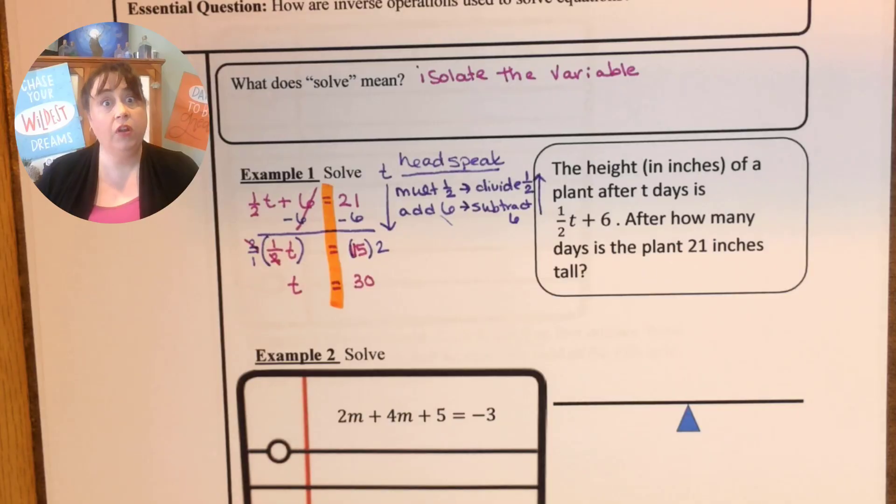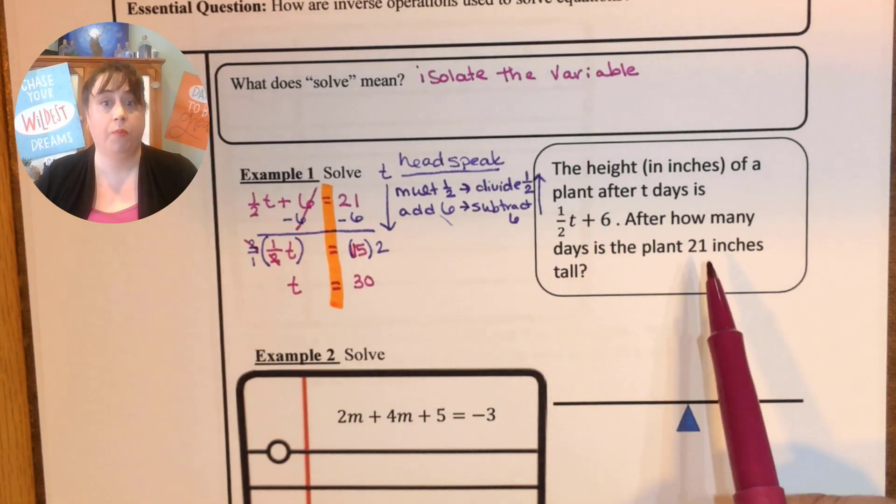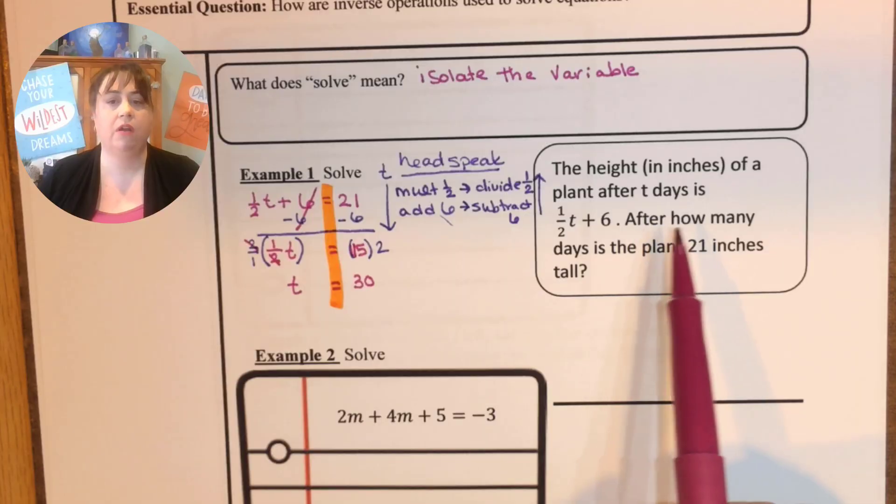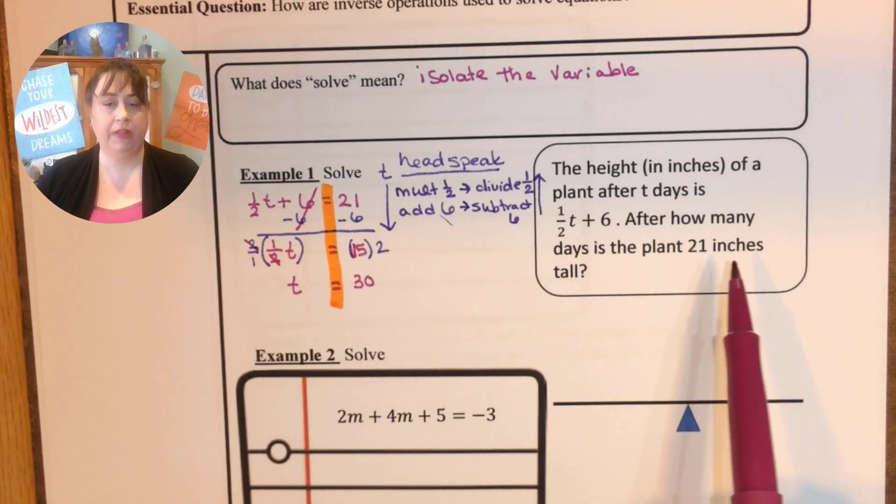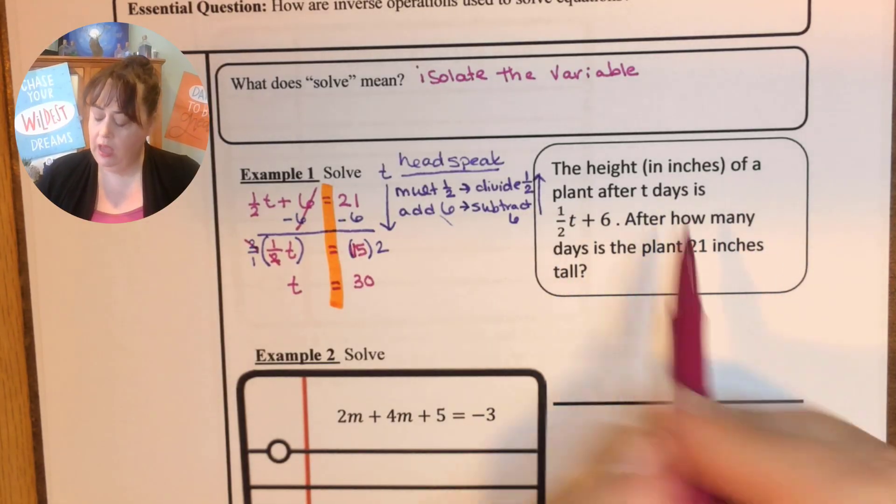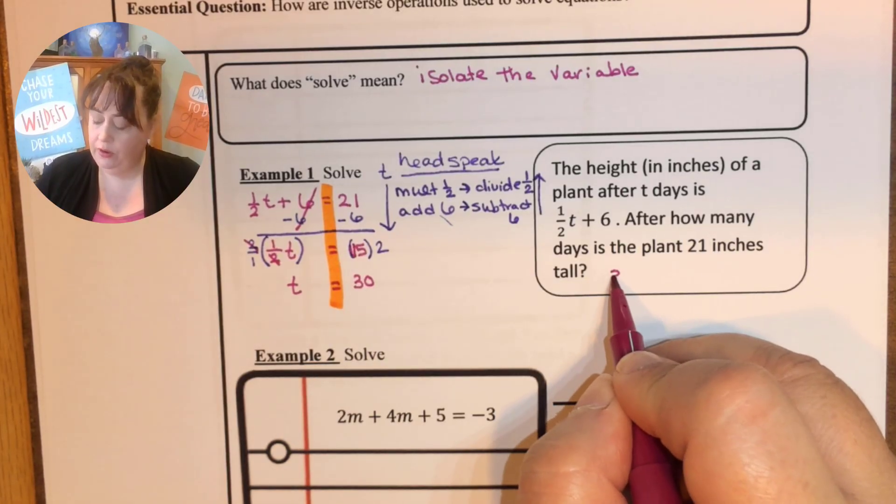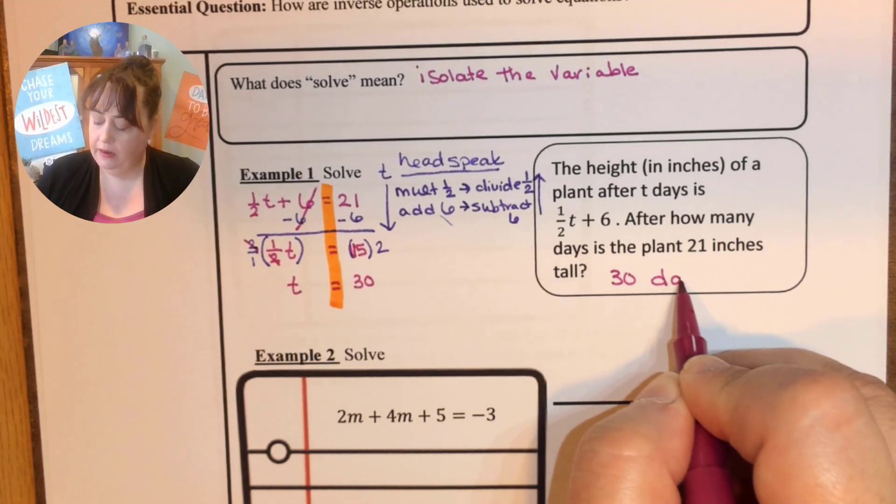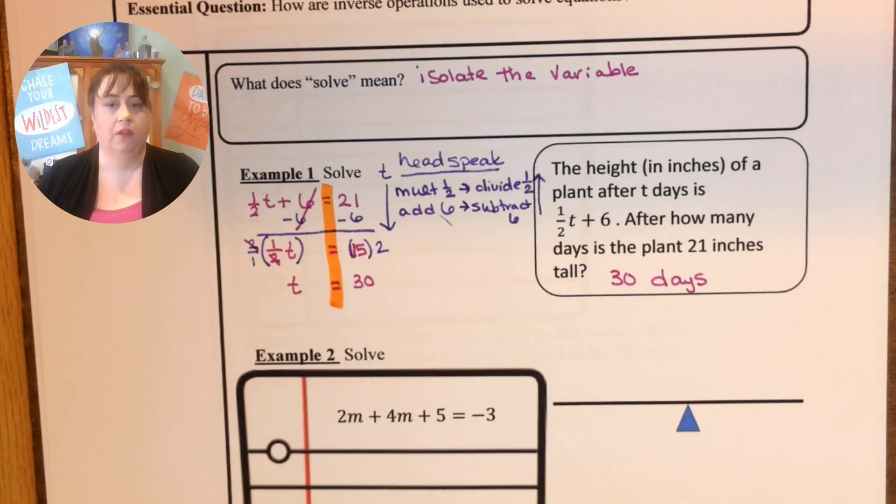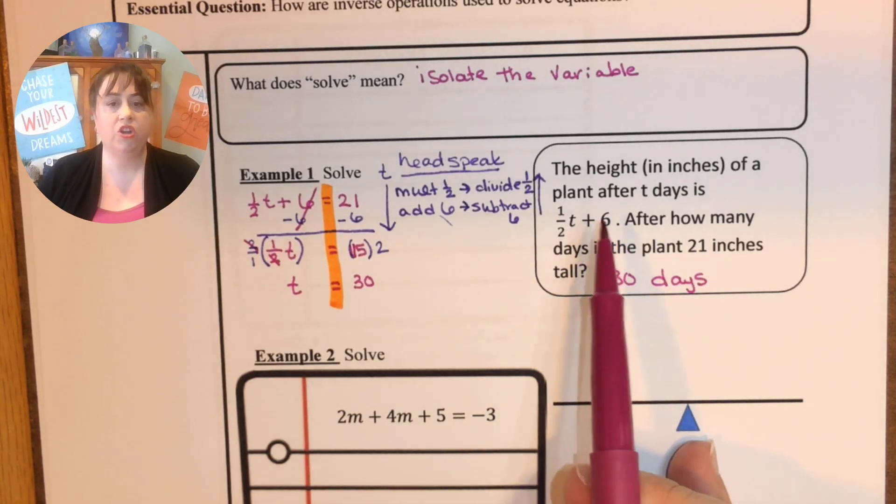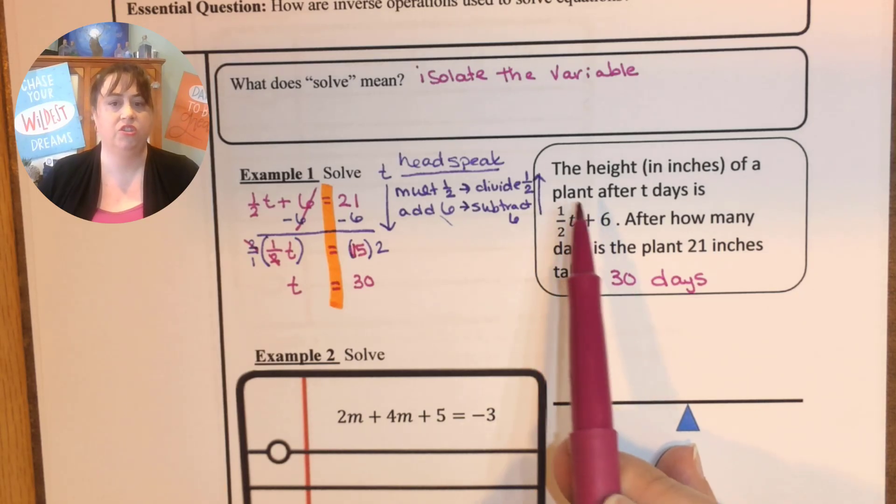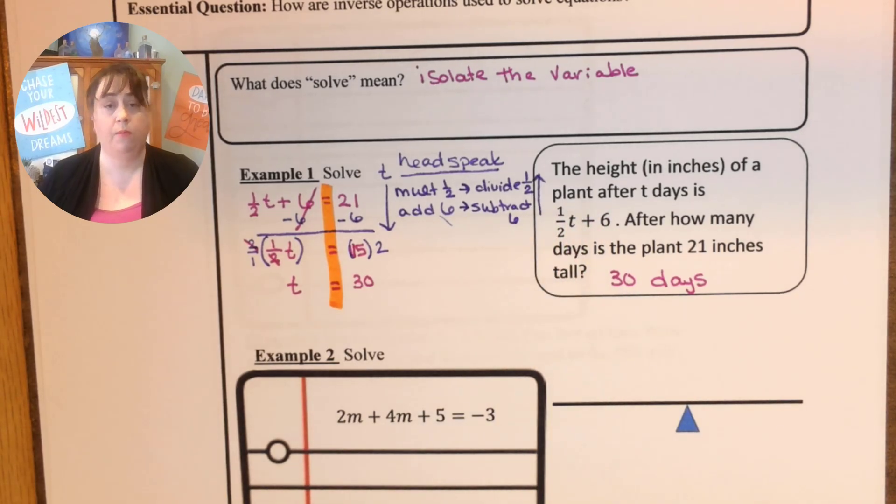So we've solved our equation but we have not answered our actual problem. Our problem wants to know after how many days is the plant 21 inches tall and so this is after 30 days. So what this says is the plant started at six inches and then each day it grew half an inch. So we could have figured this out by actually just adding half an inch until we got to 30 days.